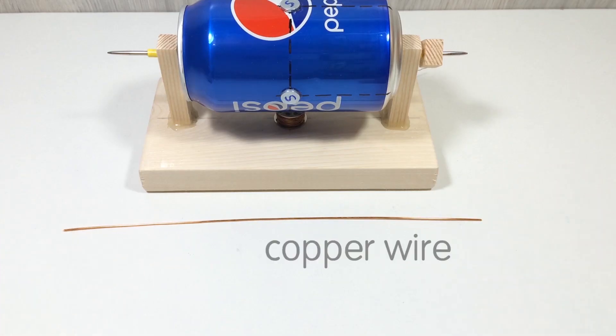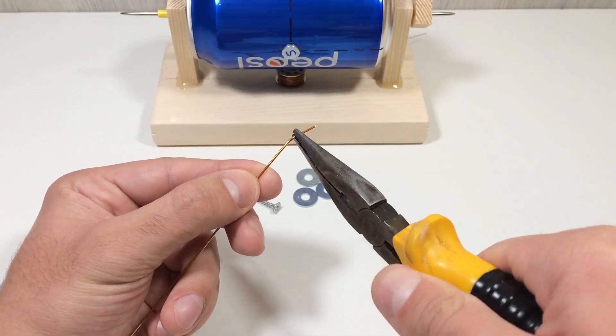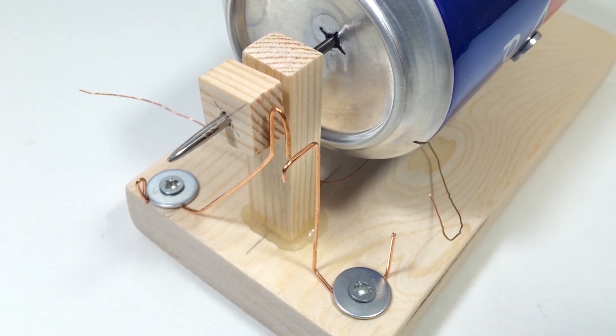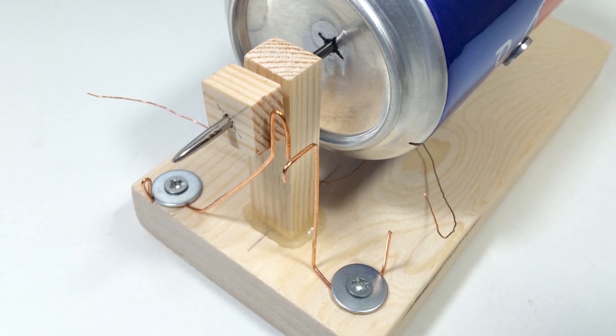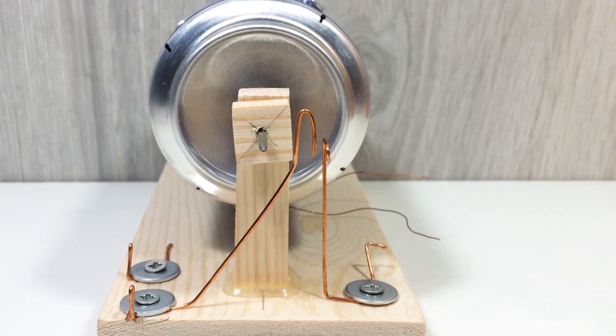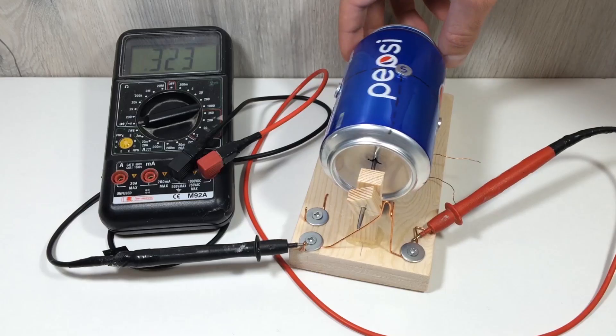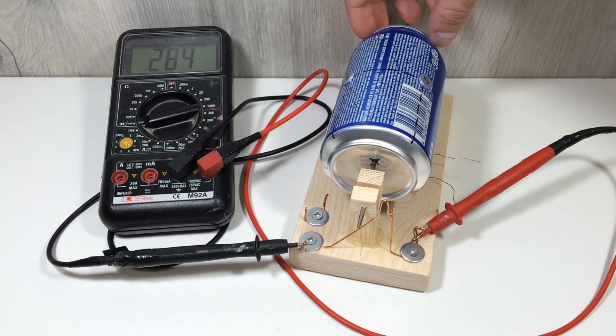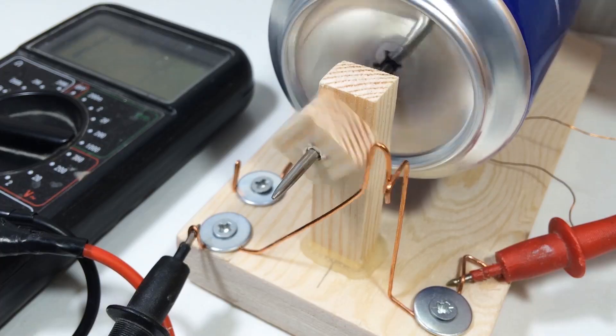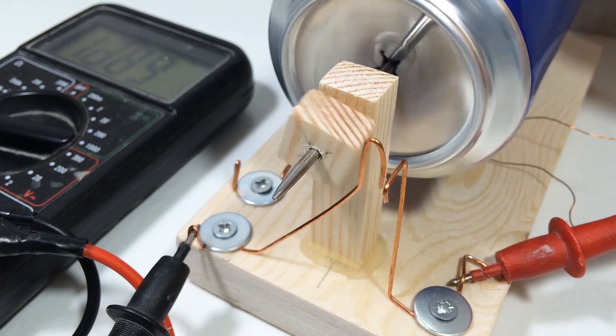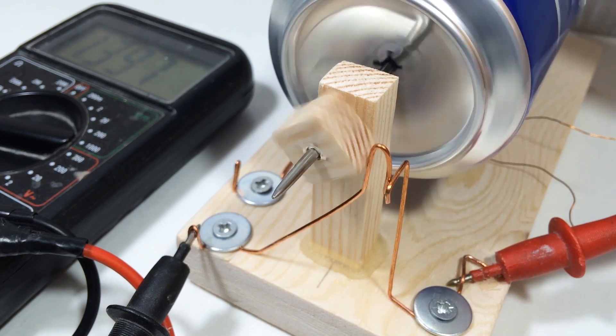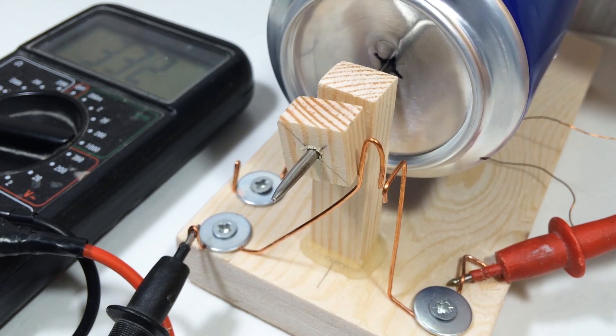Next, create a simple breaker switch from copper wire. Bend the wire so that it's spring-loaded, able to make and break contact as the wooden square turns with the axle. When one corner of the square pushes against the contact, the circuit closes, sending current into the coil. When the corner passes, the circuit opens, the coil shuts off, and the cycle repeats. This switching is what makes the motor run.